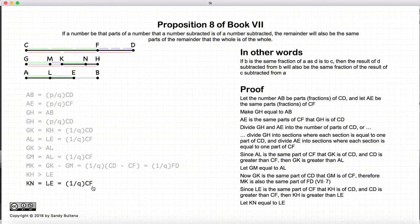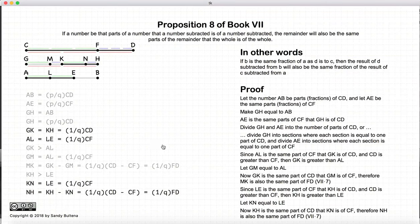Alright. Now, KH is the same part of CD as KN is of CF. So if we take KH minus KN, it will be the same part of CD minus CF. Now, KH minus KN is NH, and CD minus CF is FD. So we have that NH is the same part of FD as GK is of CD.